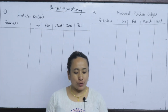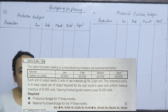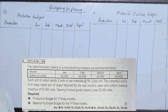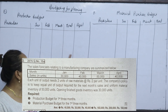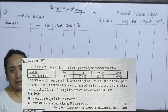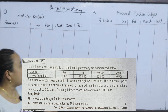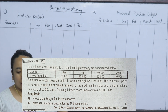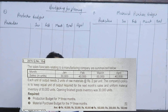Now we will solve a question relating to a manufacturing company. The manufacturing company involves raw materials and finished goods. We are given sales data from January to April, and we need to reduce operations based on demand. Each unit of output requires 2 units of raw material.